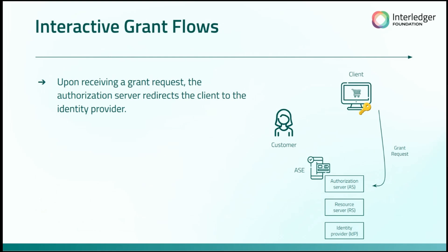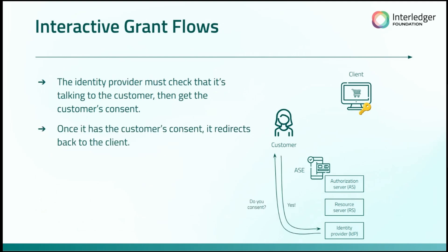In an interactive grant flow, once the client makes that grant request to the authorization server, the authorization server says it can't simply give you an access token — instead, it will redirect you to the identity provider. The identity provider will make sure the customer is who they say they are, probably through some kind of login process, and will then give the customer an option to consent to handing over this authorization to the client or not. They'll wait for the client to give consent and save that response, then redirect back to the client.